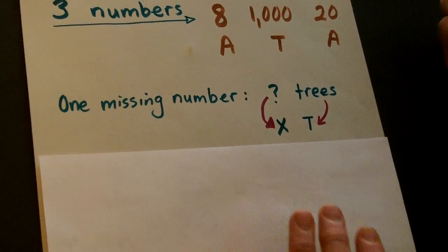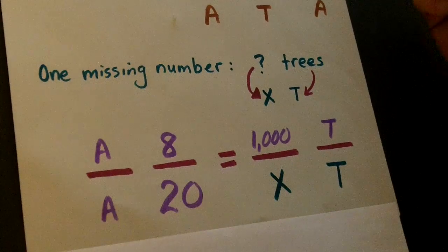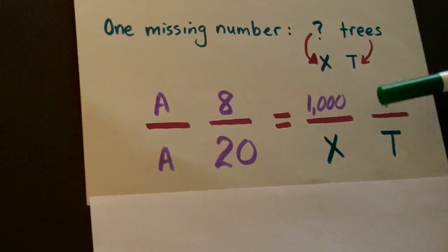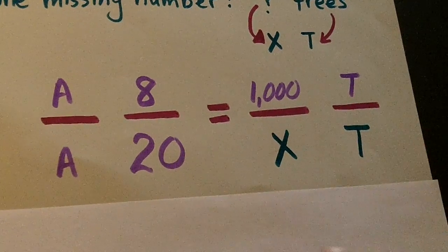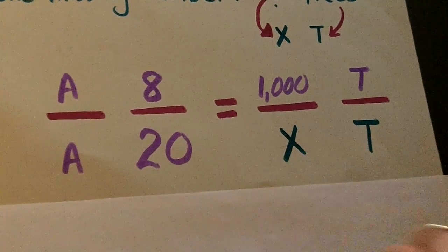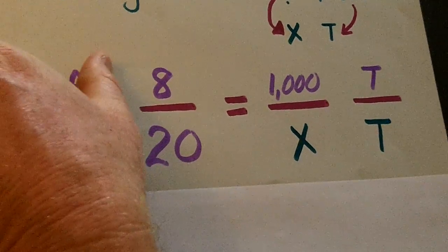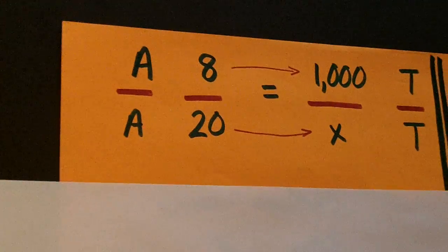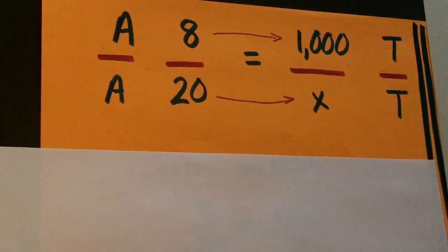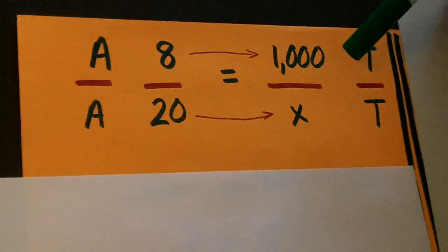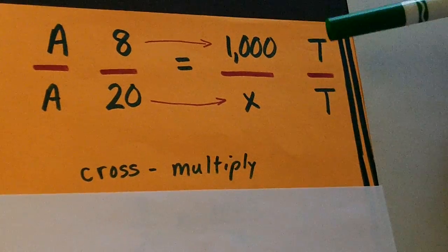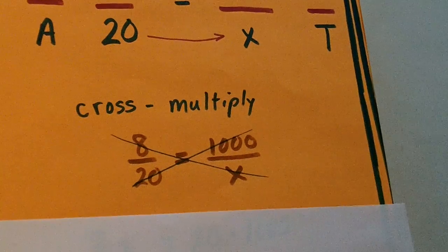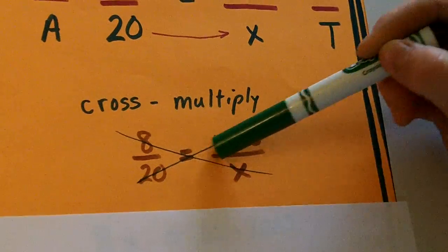And then the trees is T or TR. So, then we would come up with a proportion equation like this. Eight acres produces 1,000 trees. 20 acres produces x number of trees. Then to solve it, let's say we first write it like this. To solve it, we're going to do what's called cross multiply.